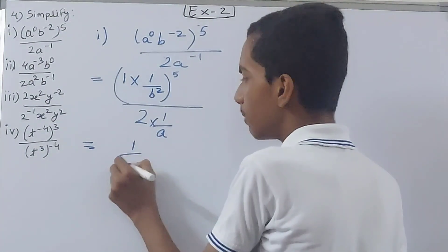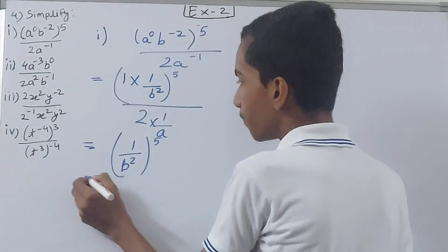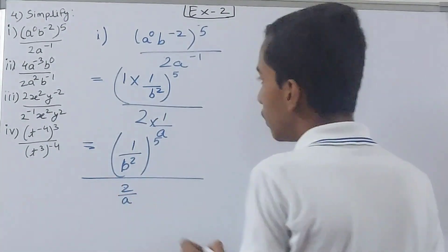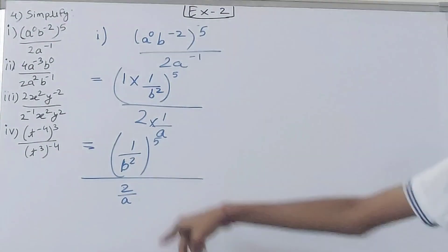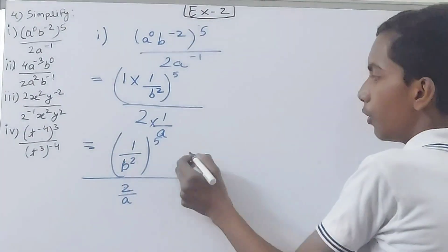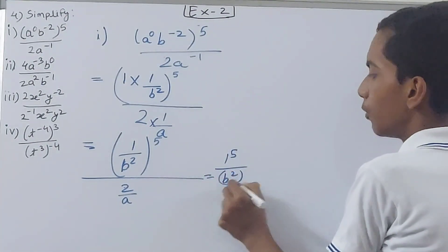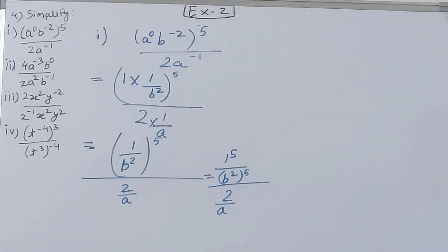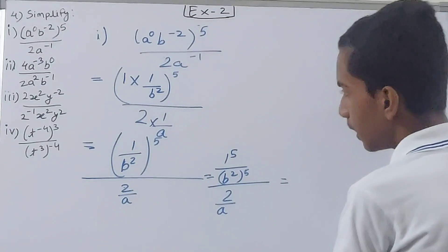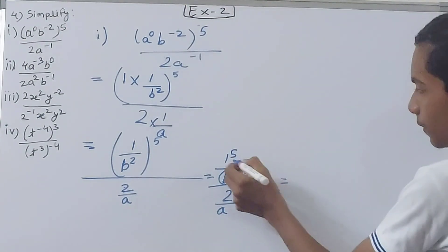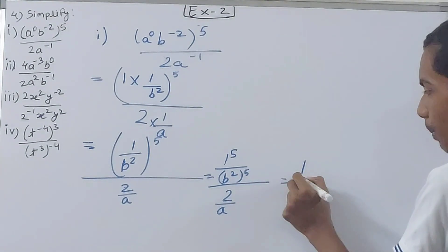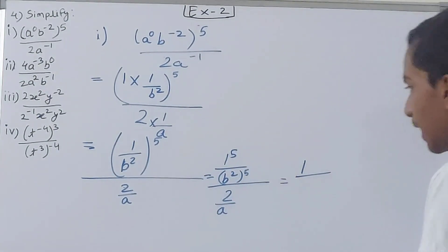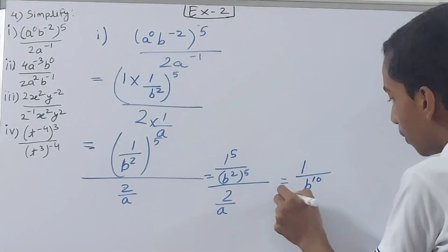Now solving: 1 into 1 by b squared becomes 1 by b² raised to the power 5. Then 2 into 1 by a gives 2 by a. So we have 1 raised to the power 5, and b raised to the power 2 whole raised to the power 5 — same base, different powers, multiply: 2 into 5 is 10, so b to the power 10.